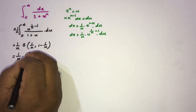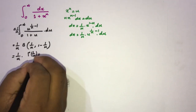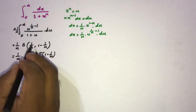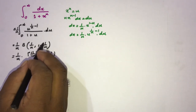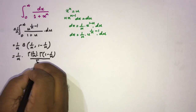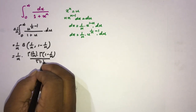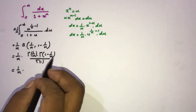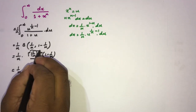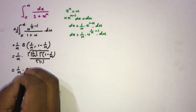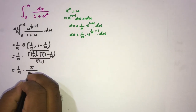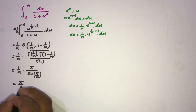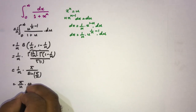Using the relation between the beta and gamma functions, this equals (1/n) times Γ(1/n)·Γ(1 - 1/n) over Γ(1/n + 1 - 1/n), and since Γ(1) = 1, we get (1/n)·Γ(1/n)·Γ(1 - 1/n). Applying Euler's reflection formula, this simplifies to π over n·sin(π/n), or equivalently π/(n·sin(π/n)).